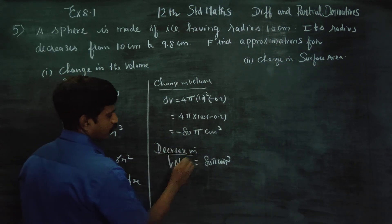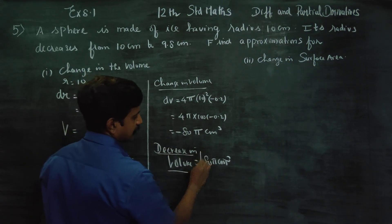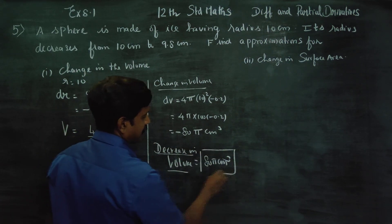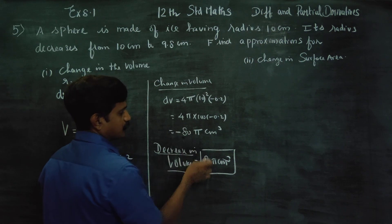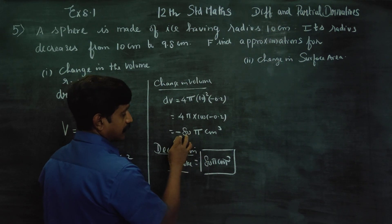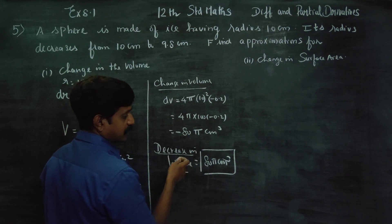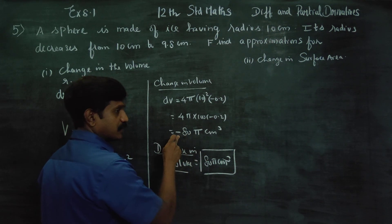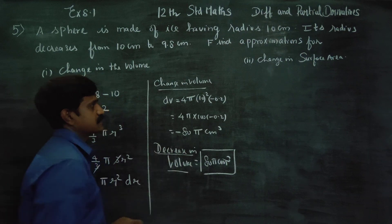So, when the result is negative, we declare decrease; when positive, we declare increase. Therefore, the decrease in volume is 80π centimeter cube. That's all.